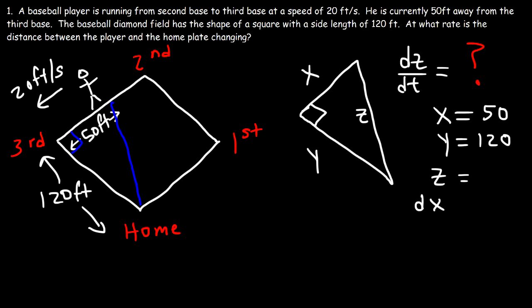But what is the value of dx/dt? Now we know that it has to do with this number, 20 feet per second. Is x increasing or decreasing? As the player moves from second to third base, this distance highlighted in green will decrease. And that is represented by x. So x is decreasing, which means that dx/dt has to be negative. So in this case, it's a negative 20 feet per second.